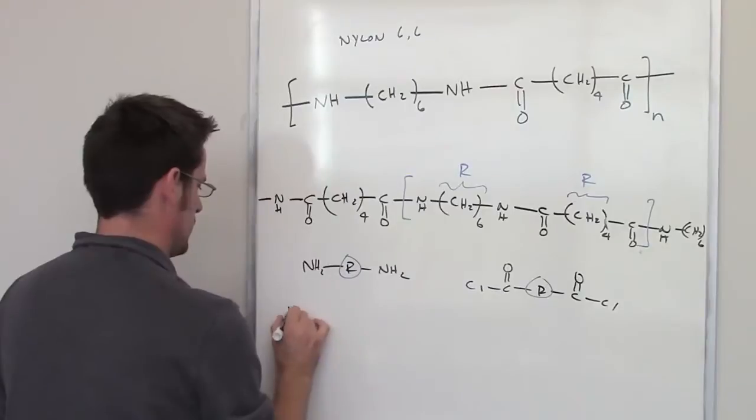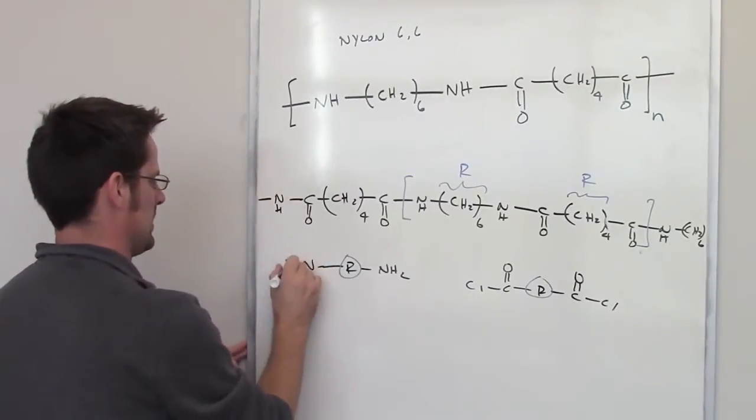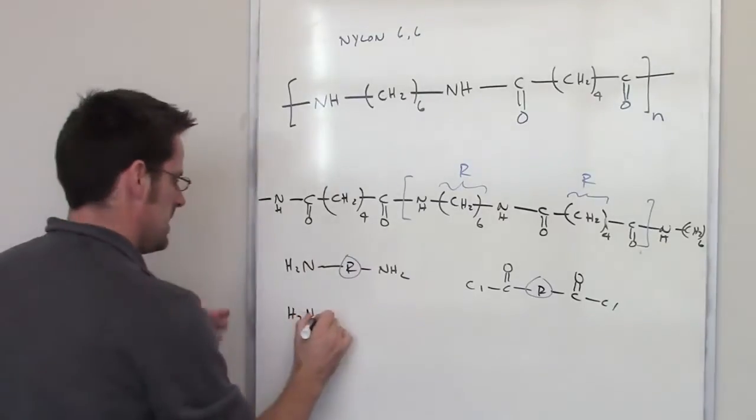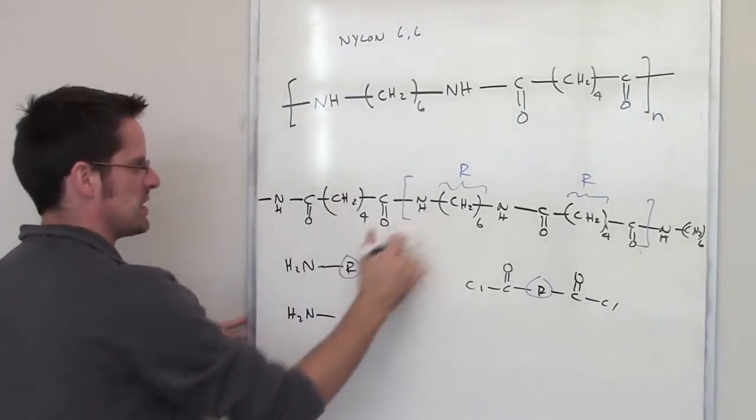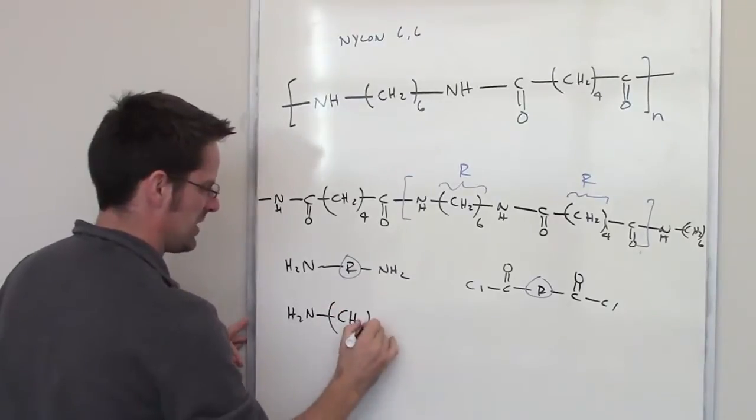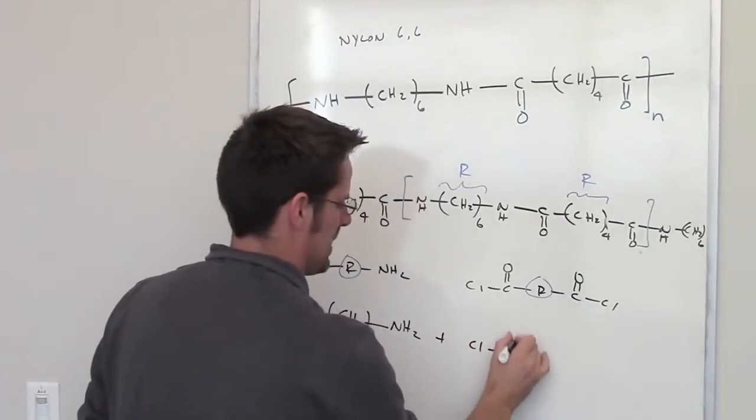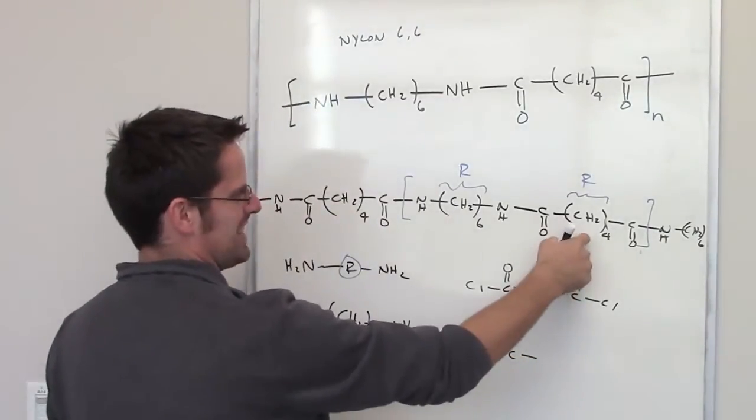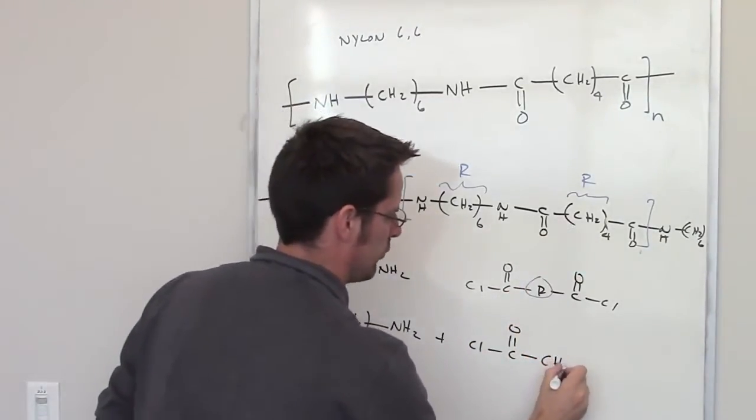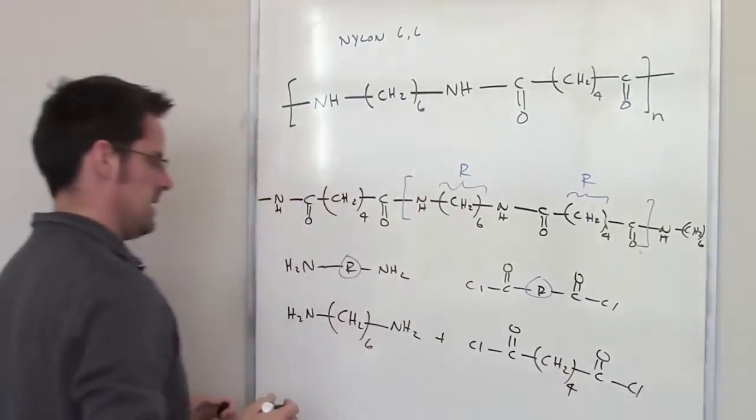I've got my two nitrogens, I'll write NH2. Instead of writing an R here, for this specific example, I'm going to write CH2, and there are six of them, and then I've got another NH2. Over here, I've got my chlorine stuck to my carbon oxygen double bond, and the R here is going to be CH2-4.